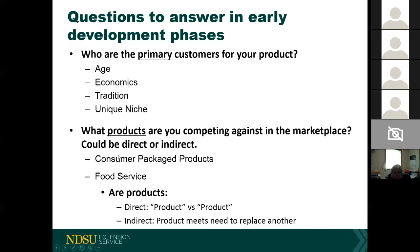Consider whether your product is a direct competitor — product versus product, like salsa A versus salsa B — or an indirect competitor where your product meets needs to replace another. For example, for diabetics, jams and jellies can be an issue, so you could create a jam or jelly version that a diabetic patient can consume, replacing the traditional version.